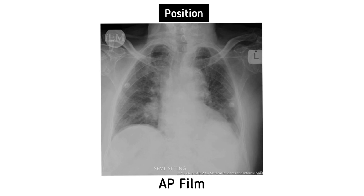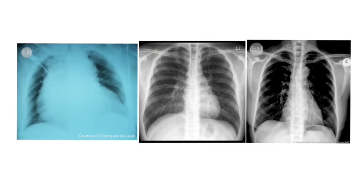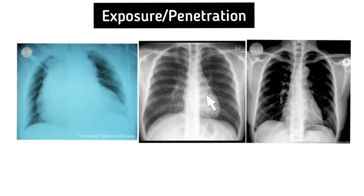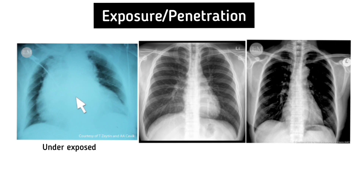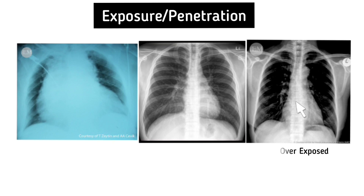Next, talking about exposure or penetration. Ideally, you should be able to see the heart, blood vessels, and intervertebral spaces. If the film is under-exposed, you will not be able to see them. If the film is over-exposed, you are able to see all vertebral bodies with obvious intervertebral spaces.